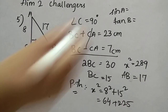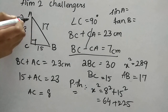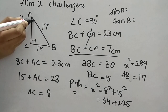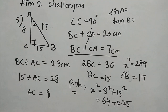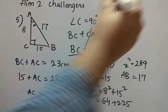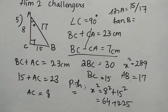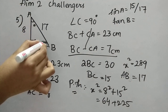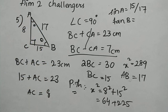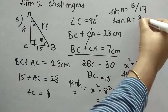Now we solve the remaining parts. For sin A, the point of theta is A, and the formula is opposite over hypotenuse, so sin A equals 15 by 17. For tan B, the point of theta is B, and the formula is opposite over adjacent, so tan B equals 8 by 15.